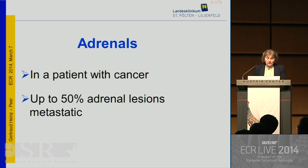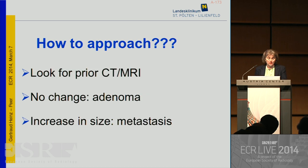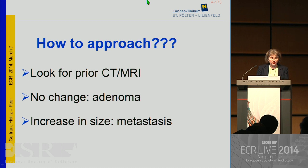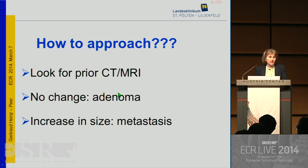We know that up to 50% of adrenal lesions in patients with underlying cancer prove to be of metastatic origin. A good advice from an old radiologist: always ask for prior images. If we have prior CT or MRI images showing a pre-existing lesion with no increase in size, it's most likely an adenoma. However, if there is an increase in size, think about metastasis.